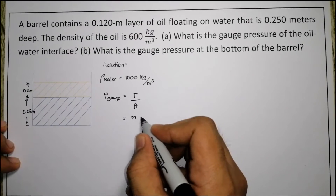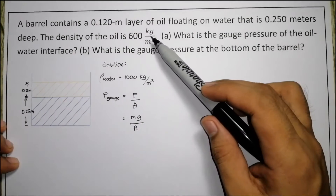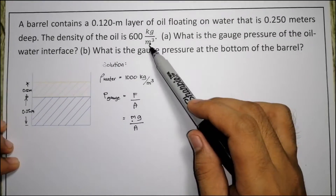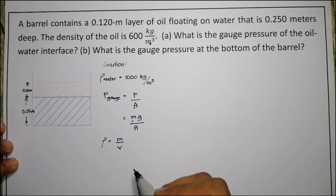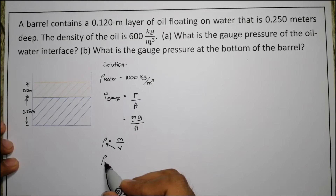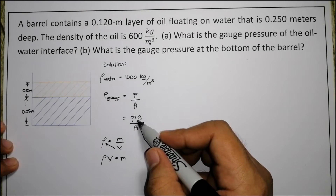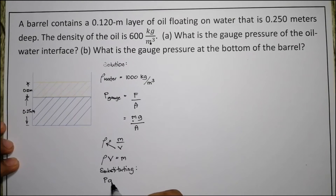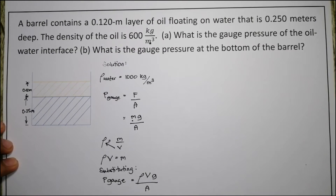We know that force is mass times gravity, so gauge pressure becomes mass times gravity divided by area. Since we only have density (in kg/m³), we use the relation: density equals mass over volume, so mass equals density times volume. Substituting, P_gauge equals density times volume times gravity divided by area.